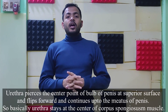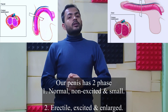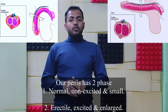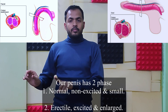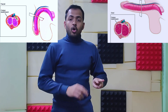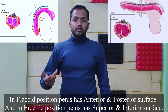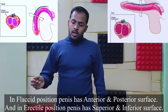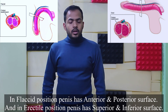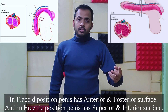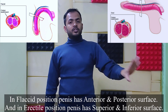Our penis has two kinds of phases. In one phase it is normal, non-excited, and small. The second is the erectile or excited and enlarged phase. In the flaccid or non-excited position, the penis is small and has two surfaces: anterior surface and posterior surface. In the excited or erectile position, it has two surfaces: superior surface and inferior surface.